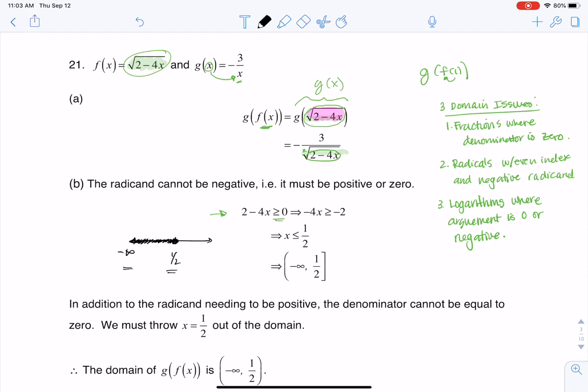Oops, that's a line. Negative infinity to 1 half. And I'm going to put the bracket here because you are allowed to take the square root of 0. So because we're allowed to take the square root of 0, I'll go ahead and include 1 half. If I wasn't allowed to square root 0, I would put a parentheses. But I can.